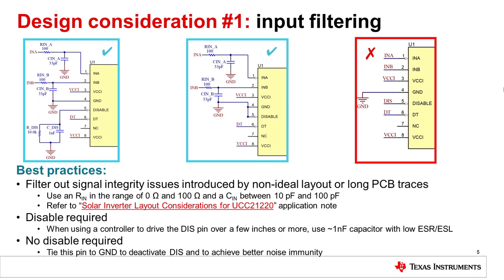To mitigate these effects, use an input resistance R-in up to 100 ohms, and an input capacitance C-in ranging between 10 pF and 100 pF. R-in and C-in can have significant effects on reducing signal integrity issues from the input. Further details on input filtering and the effects this can have on one's system performance can be referenced in the linked application note.